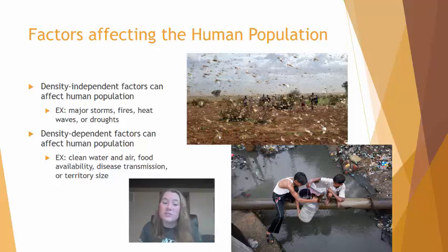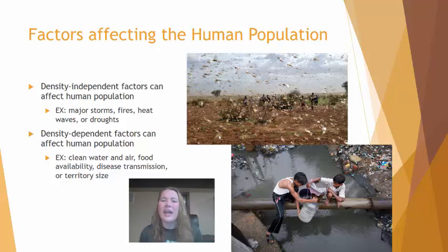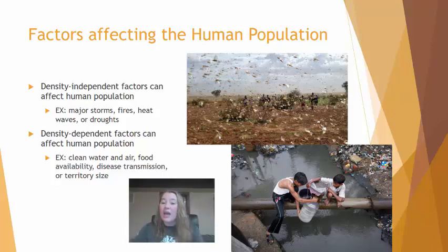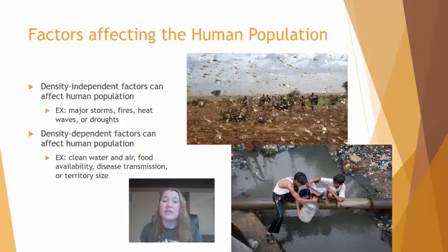Density-dependent factors for the human population include access to clean air and water and reducing disease transmission. Disease transmission is density-dependent because when many people live close together, disease can hop from person to person quickly. Access to clean water and air also becomes density-dependent because concentrated populations produce waste in a smaller area, with less space for it to dilute, leading to greater health impacts.